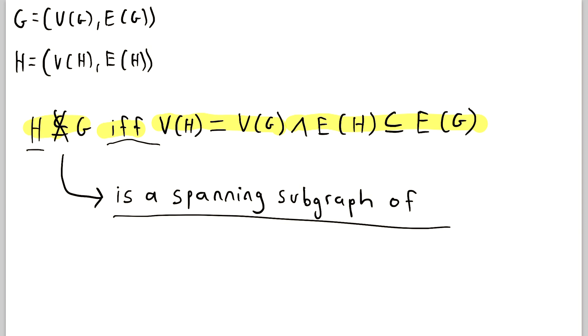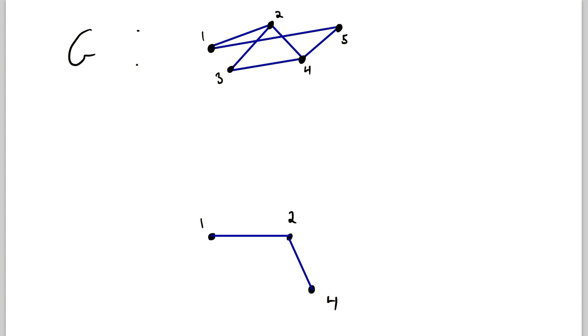So let's look at an example. So here we've got our graph we'll call G and we've got our graph we'll call H. As things stand currently, H is a subgraph of G because it fits the definition of subgraph that we previously stated. But H is not currently a spanning subgraph of G and that's because its vertex set is not equal to the vertex set of G.